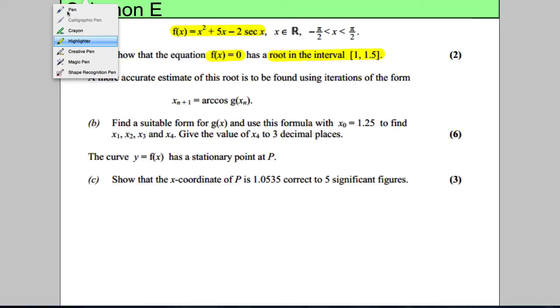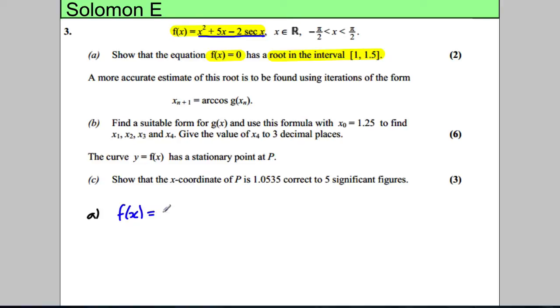So what we're going to have to do here is show that there is a change of sign between 1 and 1.5. For part a the first thing to probably do is to rewrite this but with a cos in it because there's no sec button on our calculator. So first you write that f of x is equal to x squared add 5x subtract 2 divided by cosine of x.